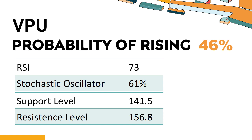DPU has a 46% probability of rising stock price, meaning the probability of falling is relatively high. Combining multiple technical analysis indicators, DPU has 5 bullish signals and 3 bearish signals. DPU's short-term support level is 146.6; if it falls below 146.6, it will have a chance to test 141.5. DPU's short-term resistance level is 152.5; if it breaks through 152.5, it will look up to 156.8.